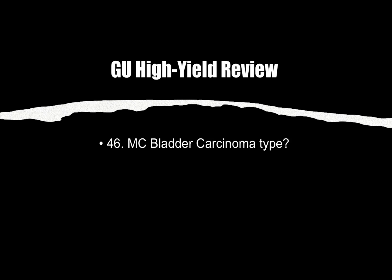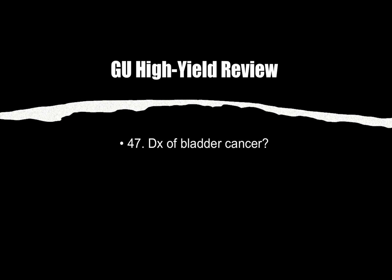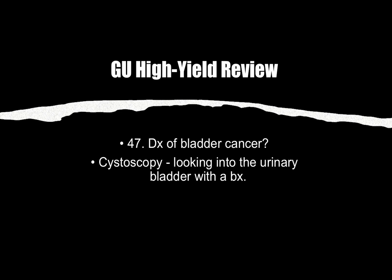Number forty-six and forty-seven: The most common bladder carcinoma type is transitional cell carcinoma. A mnemonic: transition to bladder — transitional cell carcinoma. Diagnosis of bladder cancer is made with cystoscopy — looking into the urinary bladder with a biopsy.